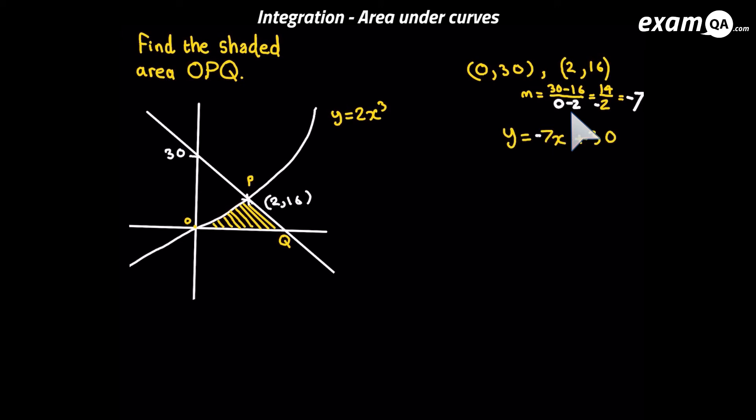Since we know the y-intercept already, we can just put that into y equals mx plus c. It's not the way I prefer. I prefer using y minus y1 equals m brackets x minus x1. But in this case, I can see the y-intercept so I'll just put it in straight away and I've got the equation of that line.